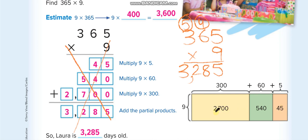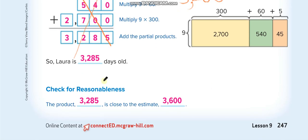This one is estimation, guys. The estimate of 365 is 400. 400 times 9 = 3,600. So here, 3,285, our real answer, is close to the estimate of 3,600.